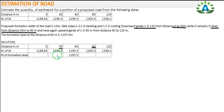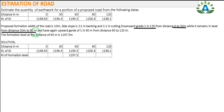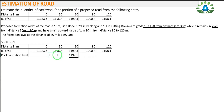Let's make the table and put the formation level at 60 m as 1197.5 m. From a distance of 30 to 90 m there is a level ground, meaning no upward or downward grade, so the formation level remains the same throughout this range. Therefore the formation level at 30 m is also 1197.5 m and at 90 m is also 1197.5 m.